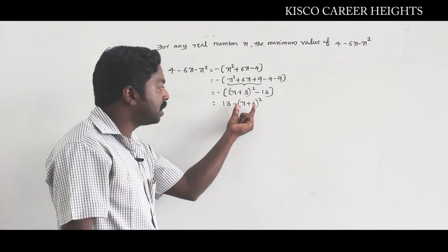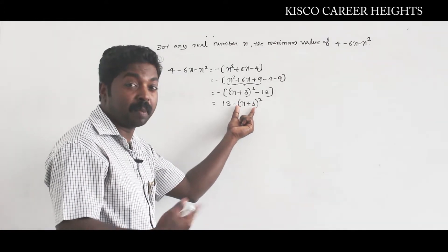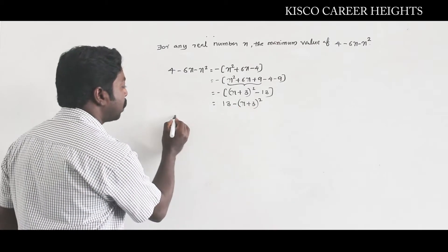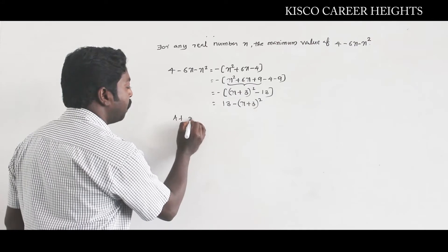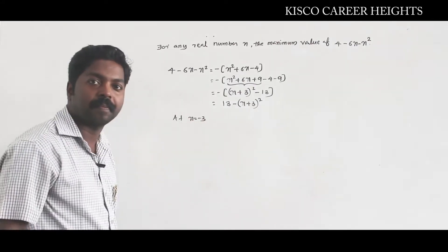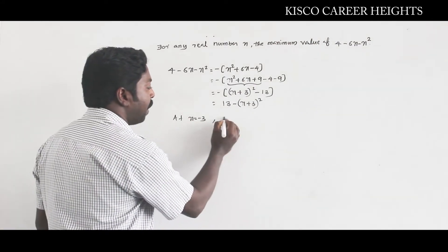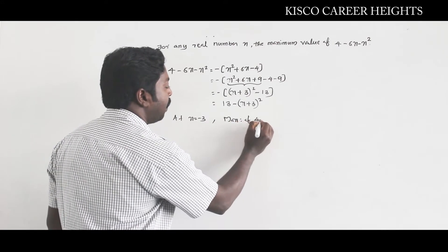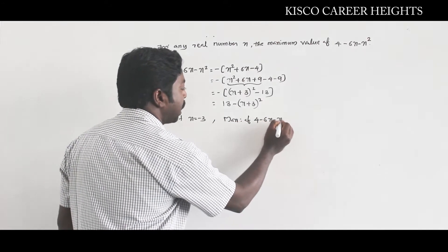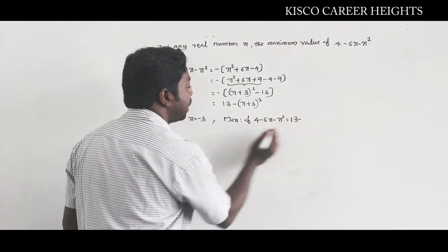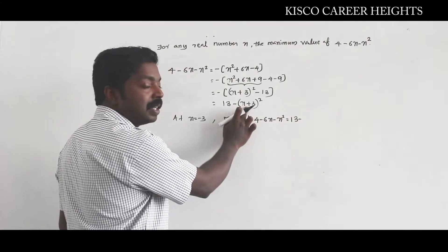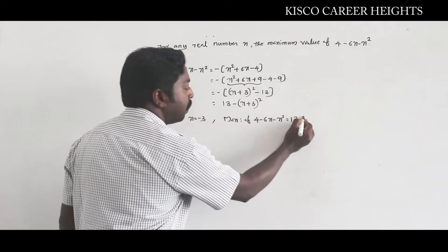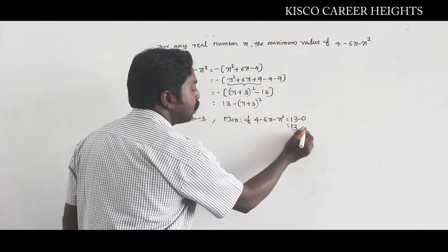At what value does the second quantity become minimum? It's nothing but x = -3. So at x = -3, it attains its maximum value. The maximum of 4 - 6x - x² is 13 minus the minimum of (x + 3)², which is 0 at x = -3, giving us 13. That is the answer.